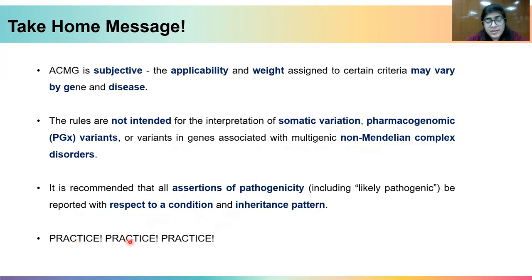Last but not least, one needs a lot of practice to correctly reach a conclusion and gain confidence that the interpretation has taken care of all the attributes. There is no shortcut. I hope that by now you will be able to correctly assign your literature attributes to your variants of interest by looking at the bigger picture and keeping all things in perspective. Thank you for your attention.